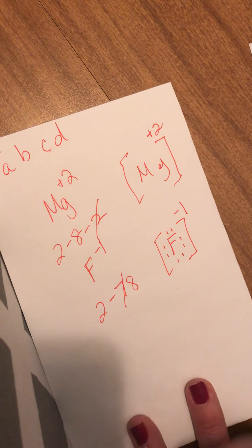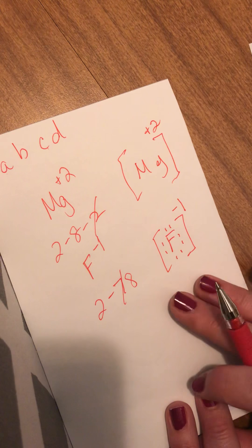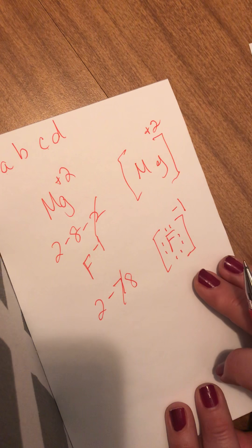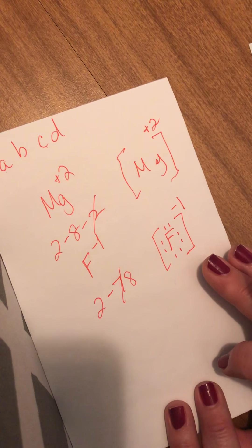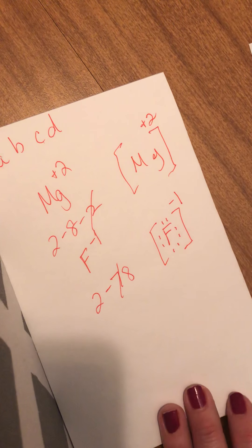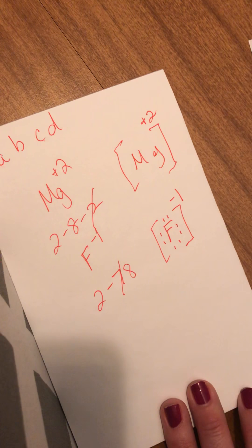There we go. So that is how you do a Lewis-Dot diagram of an atom versus an ion and how ions are different than their atoms. Join me again for more review.